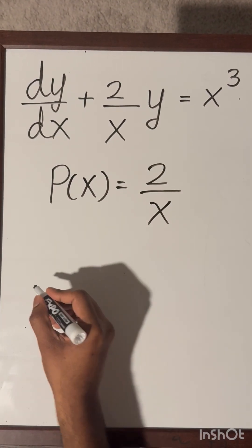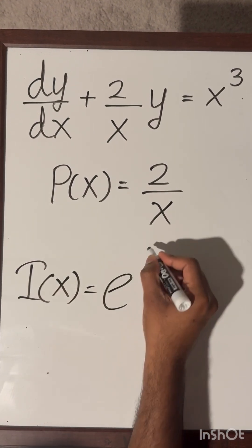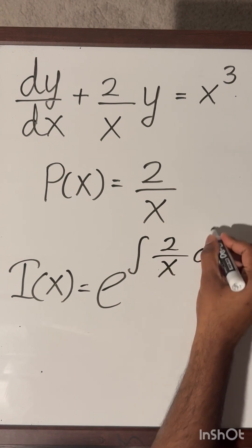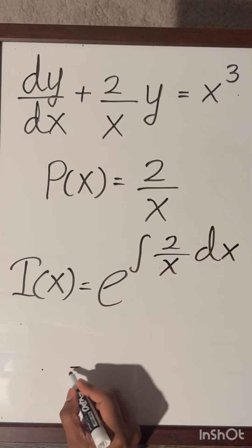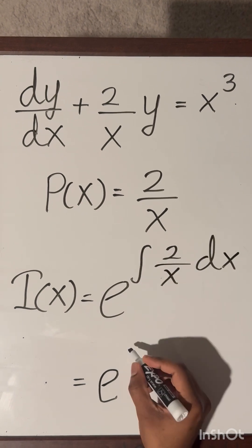Now I am going to integrate this function p of x to compute the integrating factor. So we can write down I of x, the integrating factor, as e to the power integral of 2 over x dx.